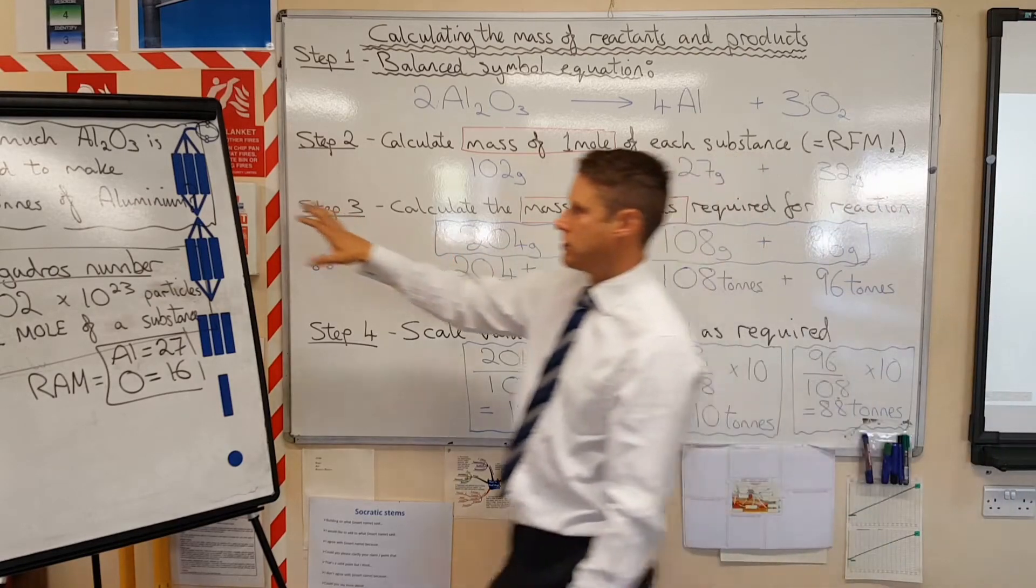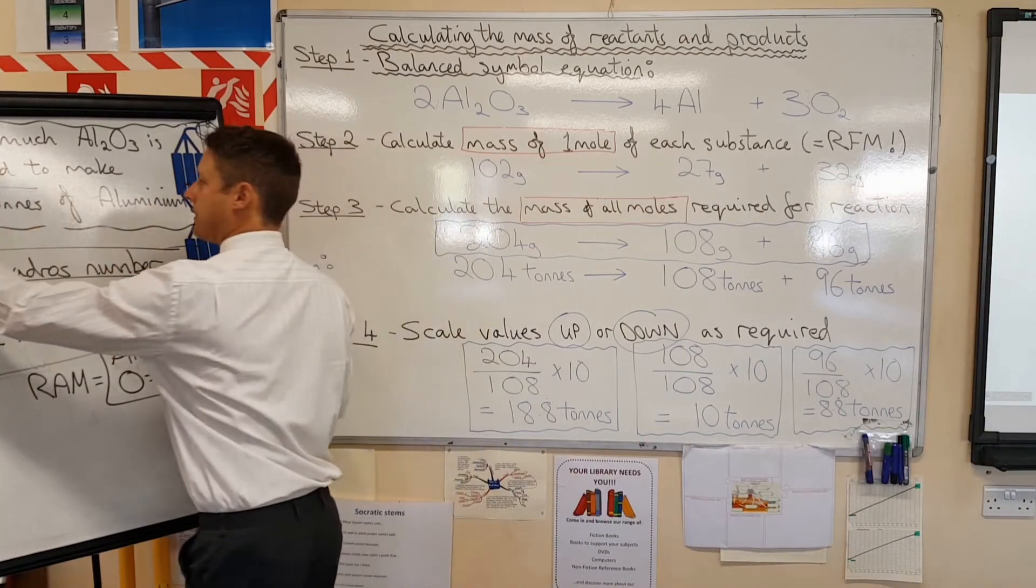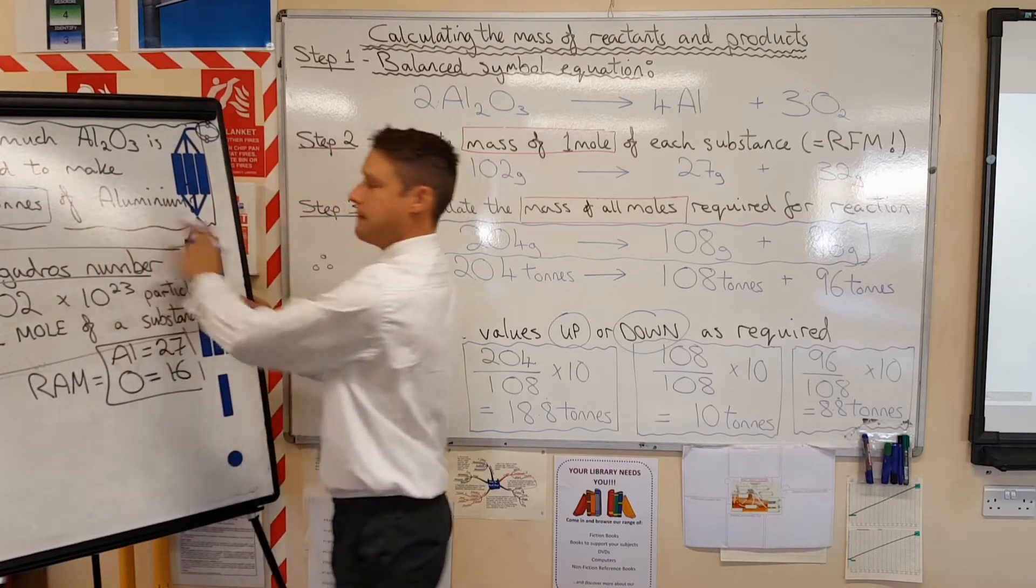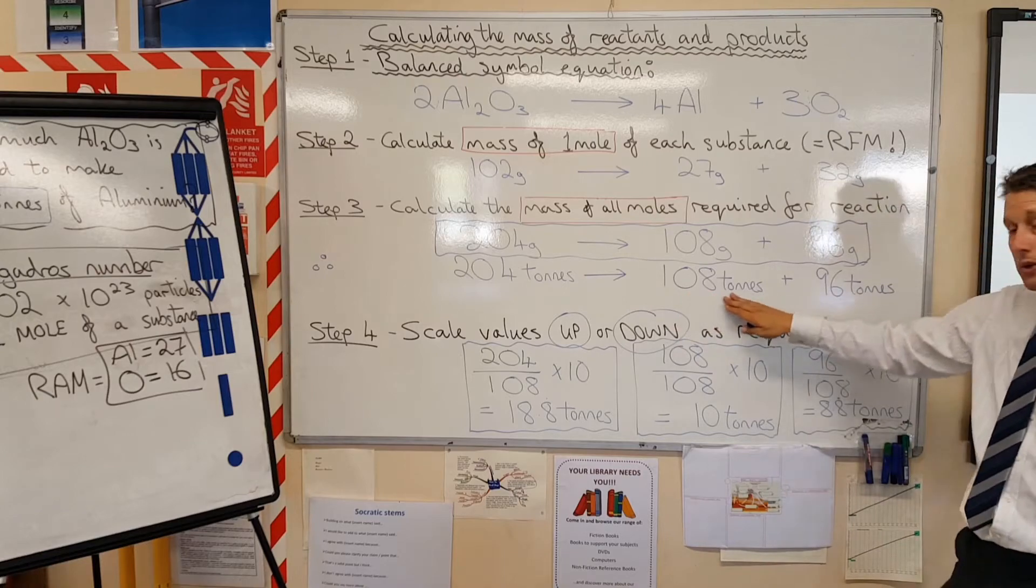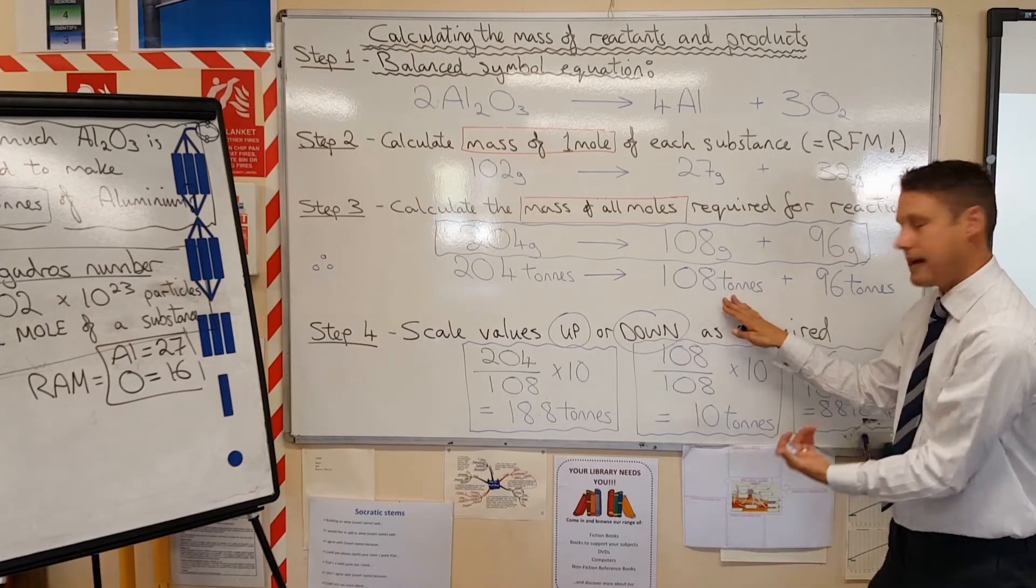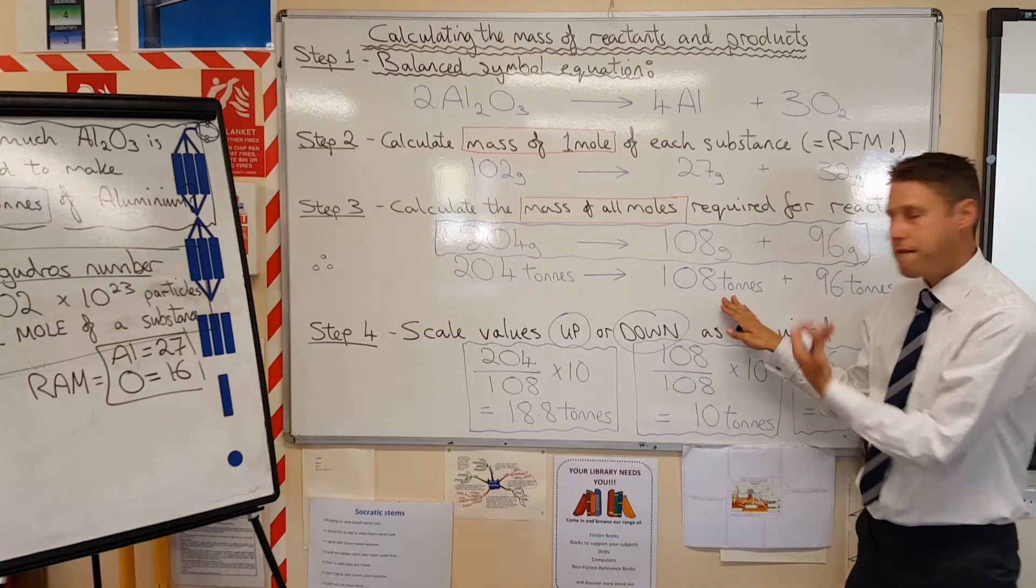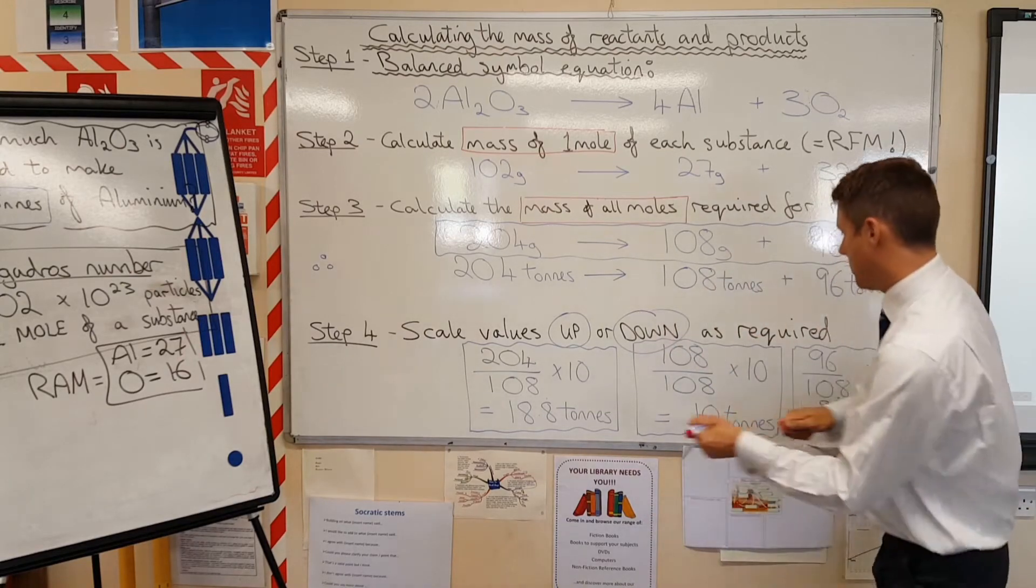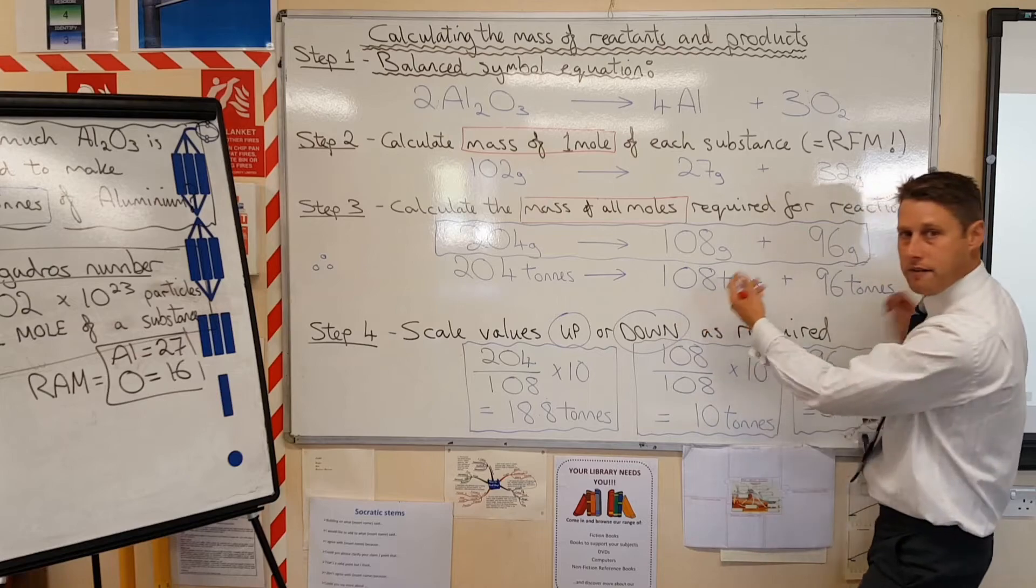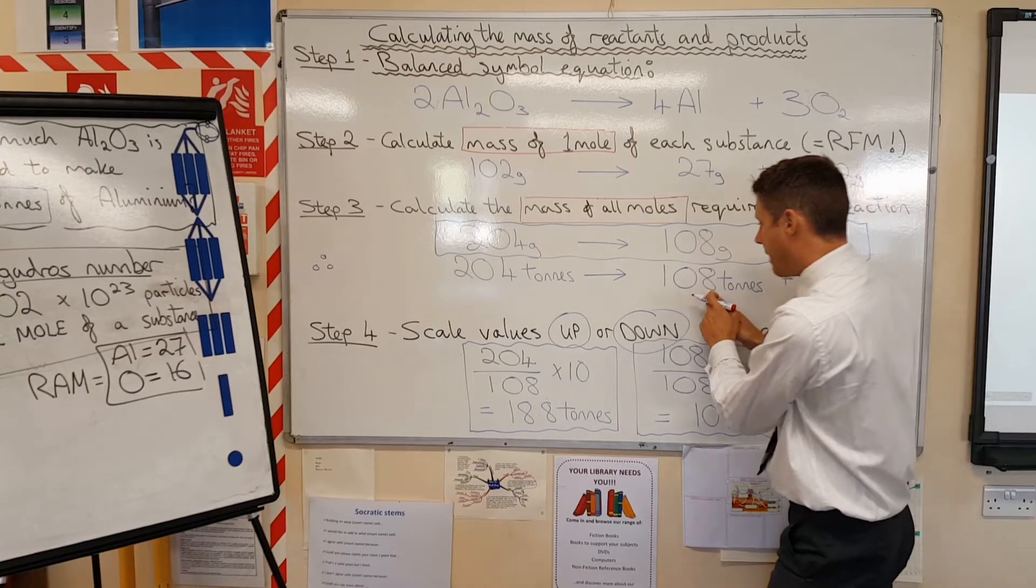Now, we've been asked, go back to the question here, we've been asked for 10 tonnes of aluminum. So we've got to try and get what we will use as 108 tonnes, we've got to get that down to 10 tonnes. So the first thing I'm going to do is take our 108 tonnes and find out how much one tonne is.